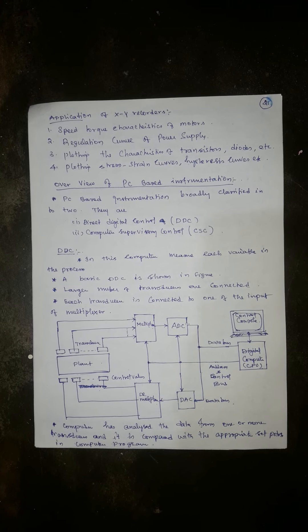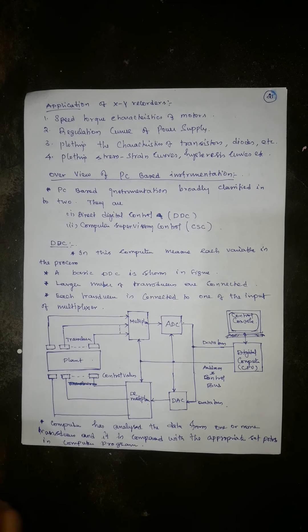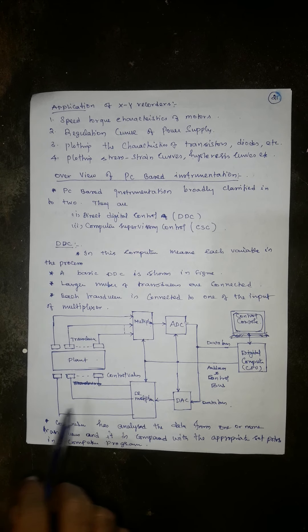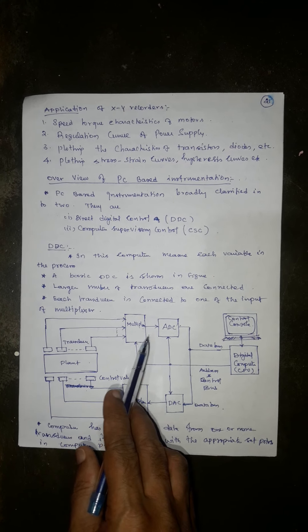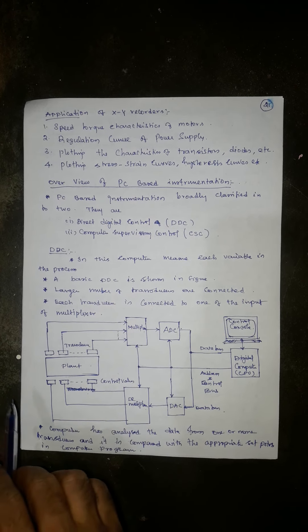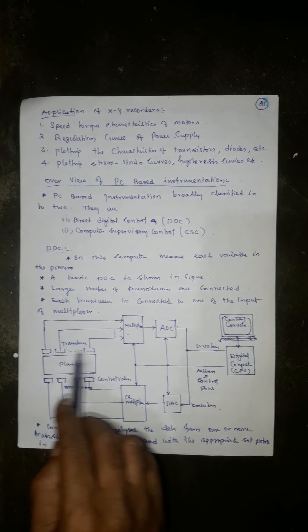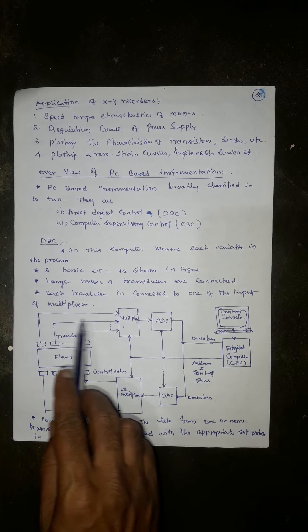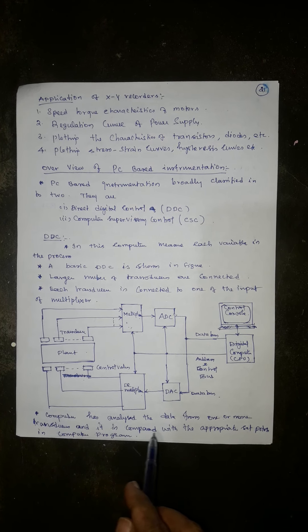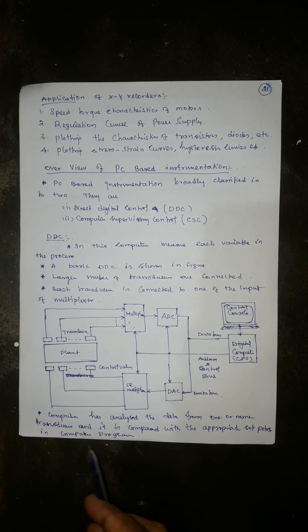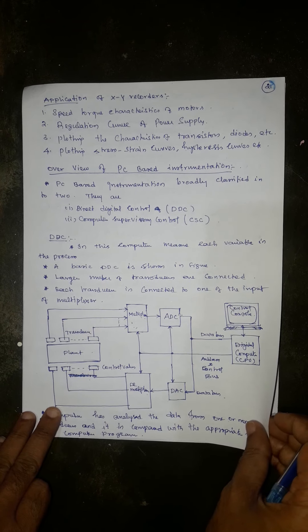In Direct Digital Control, the computer measures each variable in the process. A basic DDC is shown in the figure. A large number of transducers are connected, each transducer connected to one input of the multiplexer. The computer analyzes the data from one or more transducers and compares it with the appropriate set points in the computer program.